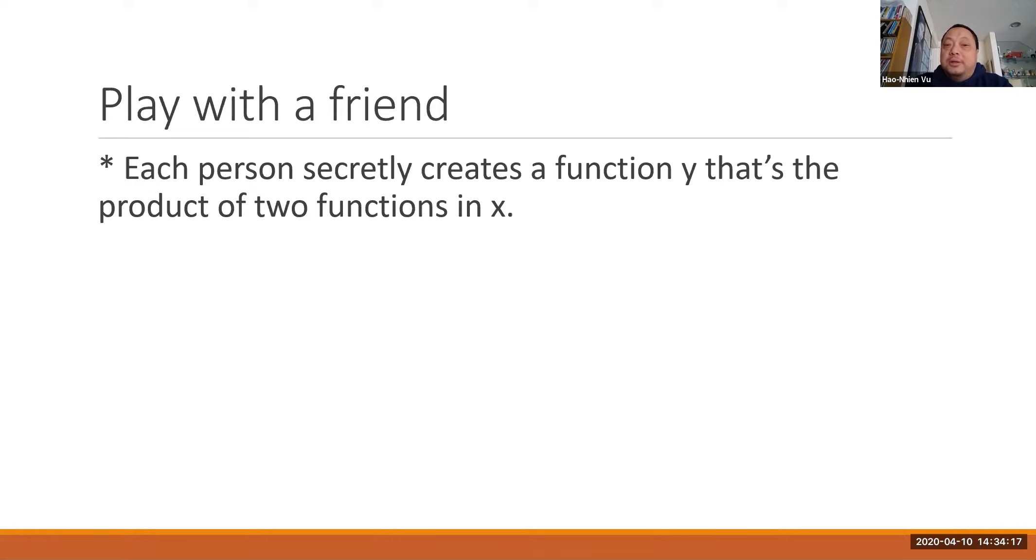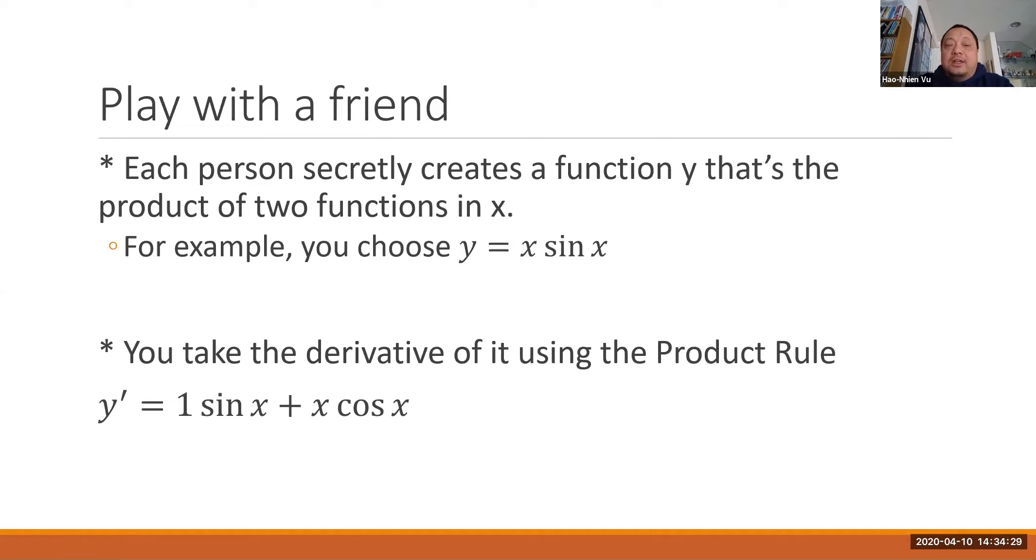Each of you secretly create a function y that is the product of two functions in x. For example, you may choose y equals x sine x and then you take the derivative of it using the product rule. So that gets you y prime equals one, that's the derivative of x times sine x plus x times cosine x, which is the derivative of sine x.